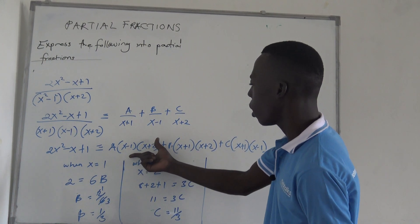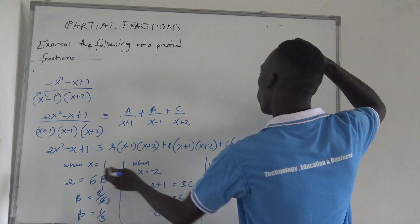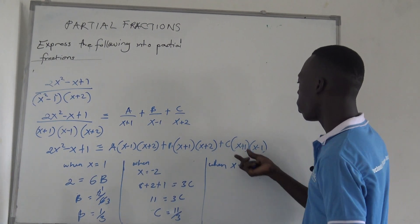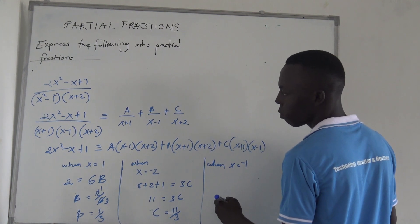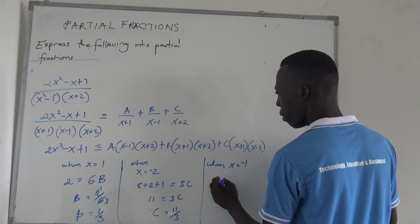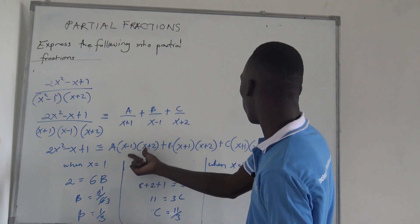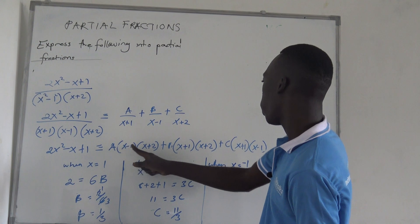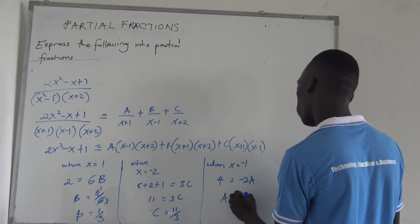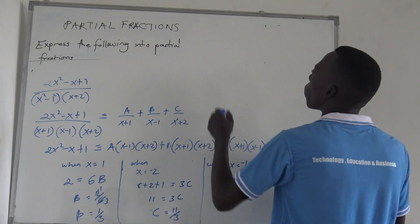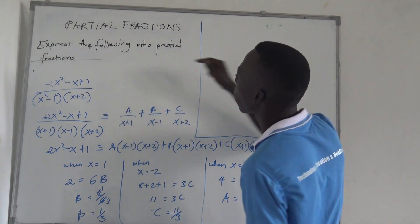Since we already used x equals 1 for B, we now use x equals negative 1. When x equals negative 1, substituting into the expression gives negative 2A on the right side and negative 2 on the left side, so A equals negative 2. We now have values for A, B, and C and substitute them back.